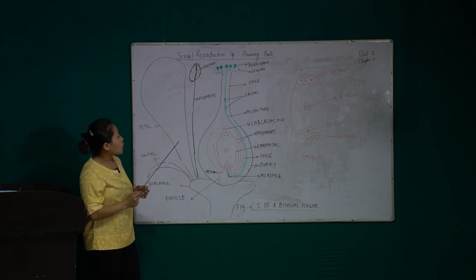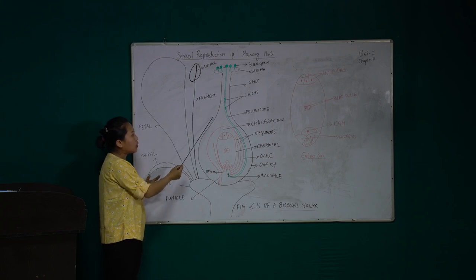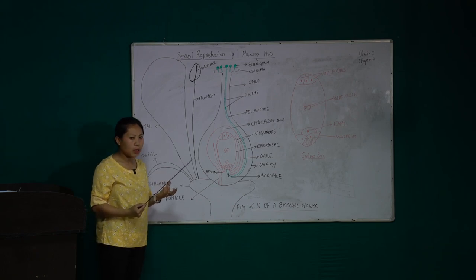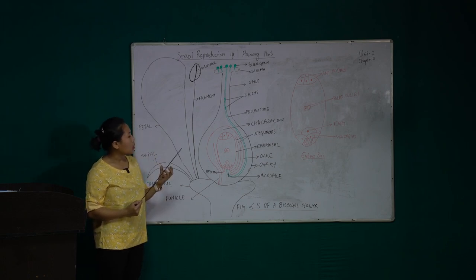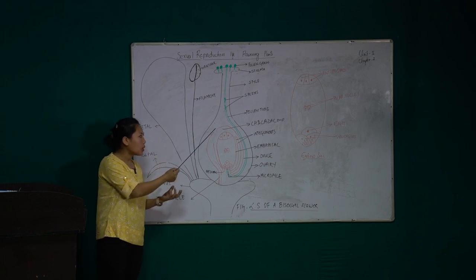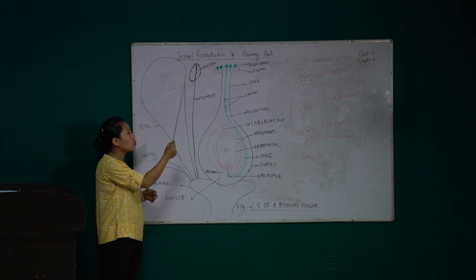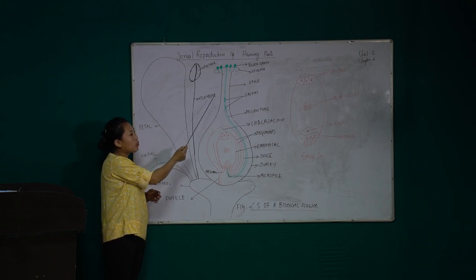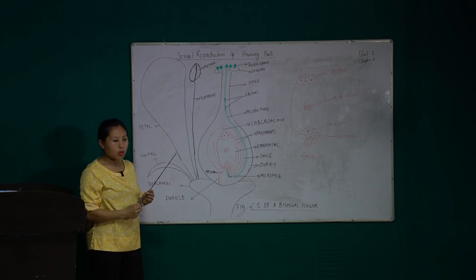In plants where both male and female structures are present, that type of pollination is called autogamy. But in plants like papaya and kiwi where a plant has either the stamen or the carpel, the transfer of pollen grain from the anther of the male flower to the stigma of the female flower is called cross-pollination.